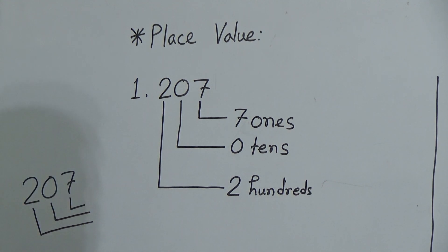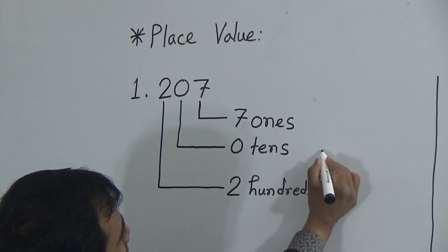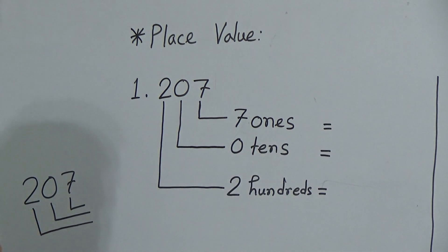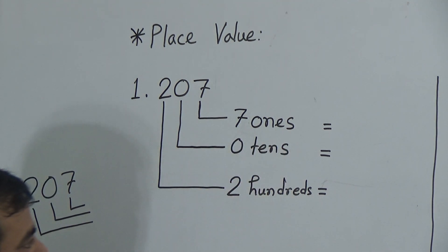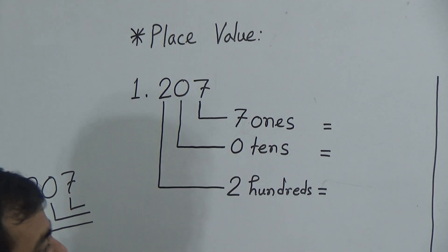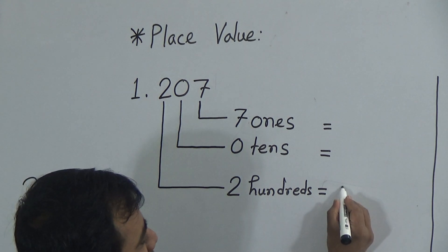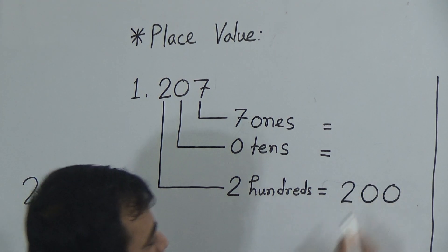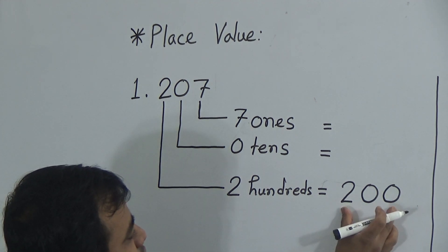I think you have understood. Now we will give equal signs to all the words: 7 ones, 0 tens, 2 hundreds. After that, we should start from the bottom to write down the number. 2 hundreds means 200 — it's 2-0-0 makes the number 200.